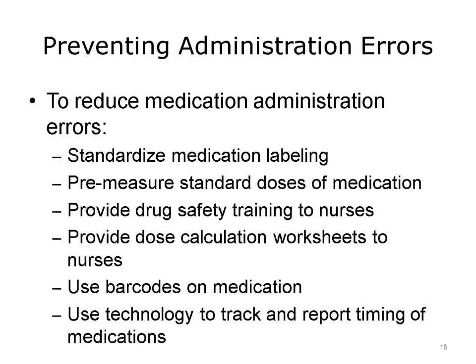Researchers have found ways to decrease medication administration errors. Hospitals can standardize medication labeling and pre-measure standard doses of medication. They can provide training in drug safety for nurses, and some hospitals provide worksheets to help nurses calculate the correct doses. To prevent interruptions, other hospitals have used signs or given nurses special vests to wear when they are administering medication. Technological solutions include using barcoding technology on medication and using a computer program to report when medications are given late.